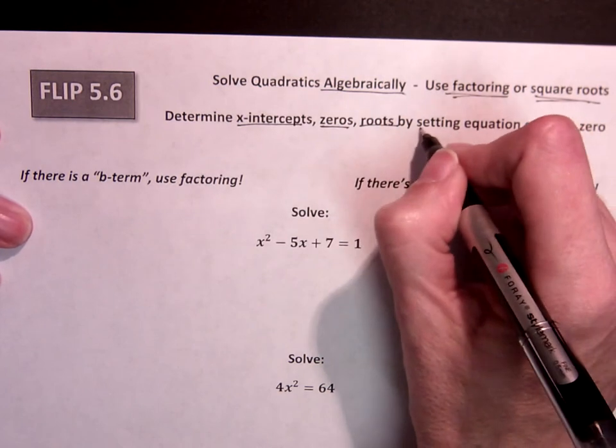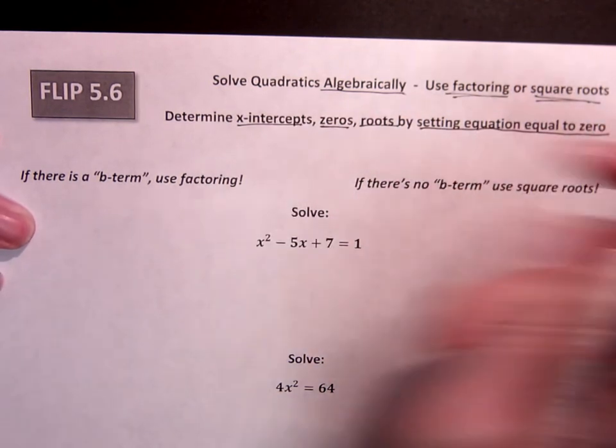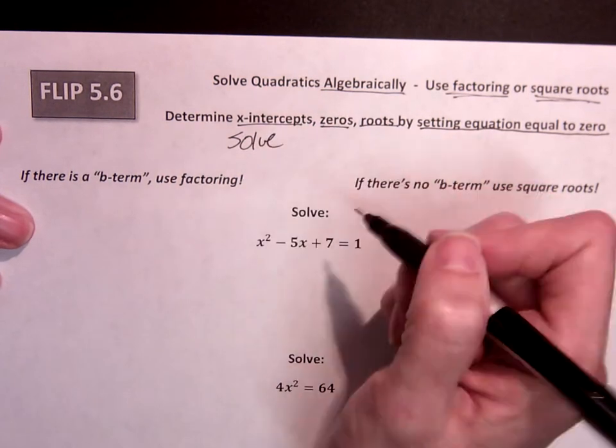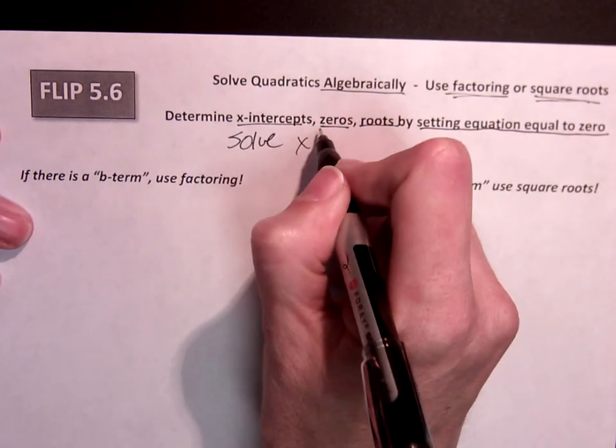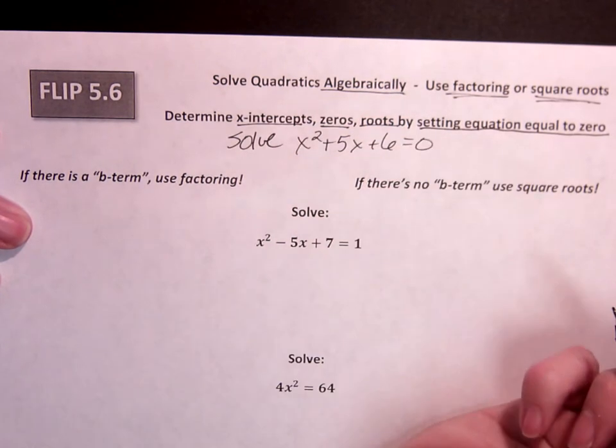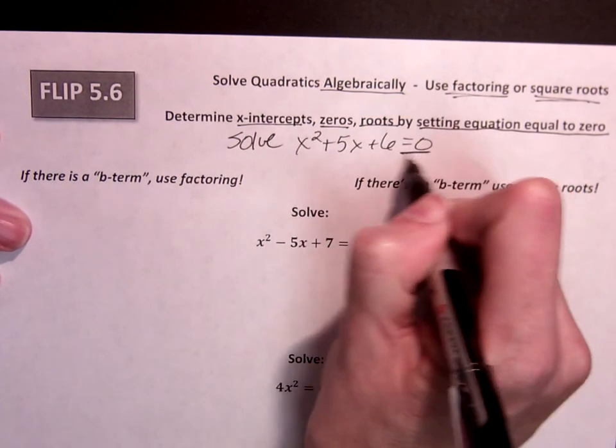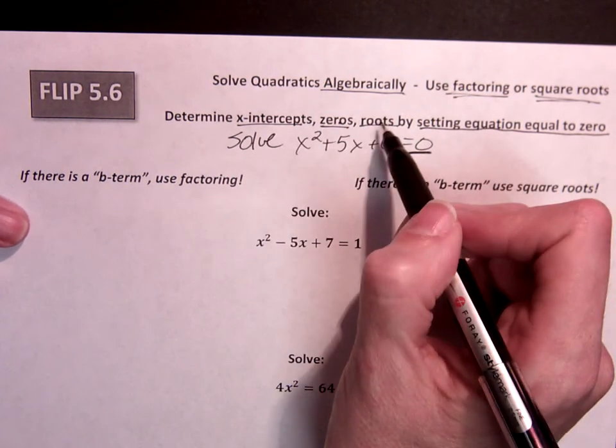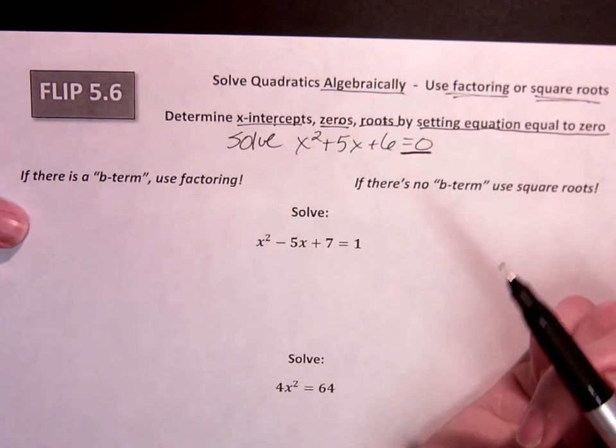Then we set the equation equal to zero. So if you ever see solve or determine the solution, x squared plus 5x plus 6 equals zero. Equals zero. That's your tip off that we're talking about zeros, which means we're talking about roots, which means we're talking about x-intercepts.